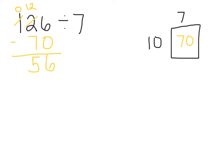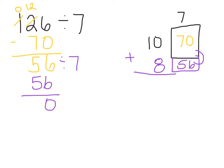So now thinking of my multiples of 7, how many groups of 7 can I make in 56? I know that 7 times 8 is 56. I have nothing left over. And I know that that matches my dividend. So my quotient is 18.